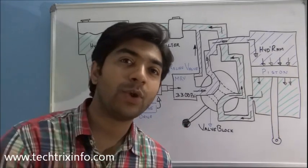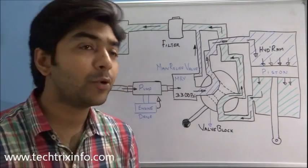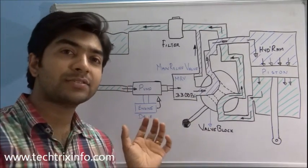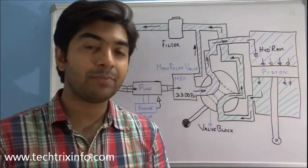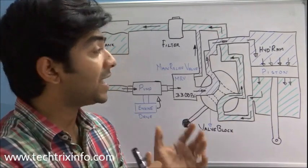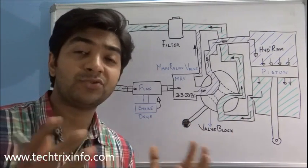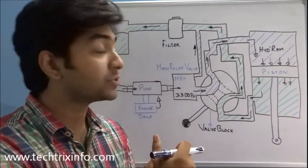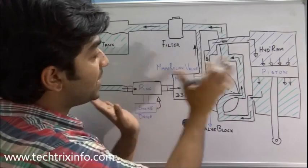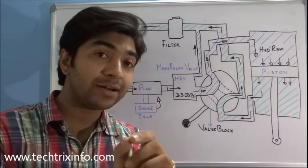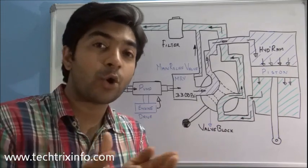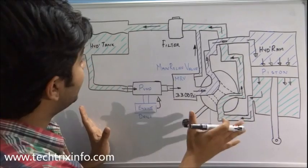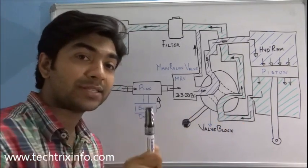Good morning and welcome back. Today let's learn about a basic hydraulic circuit. This is the basic hydraulic circuit of a construction equipment like a JCB backhoe loader machine. As you know, construction equipment like JCB machines are powered using hydraulic circuits. So we have this basic circuit laid out so you can learn how hydraulic operations happen in a construction equipment. Let's identify the main components initially.